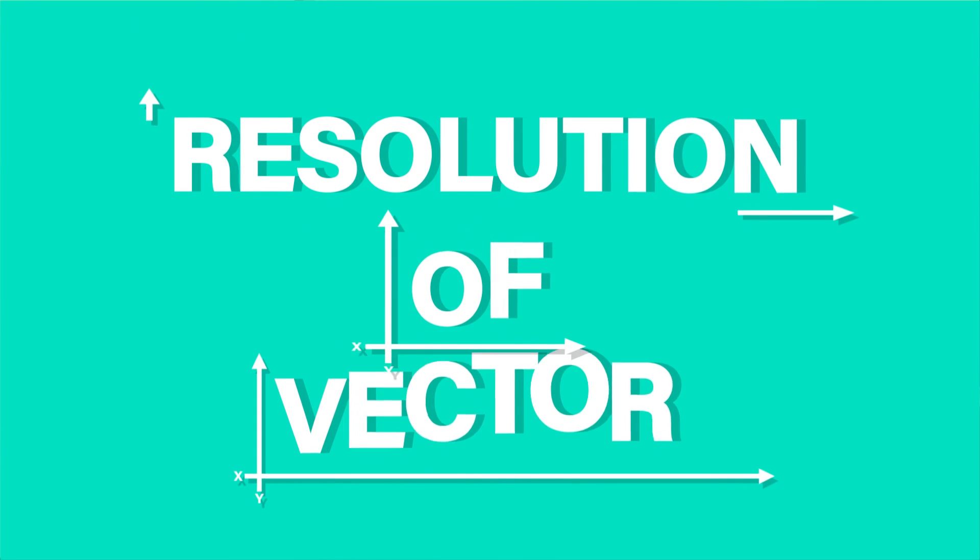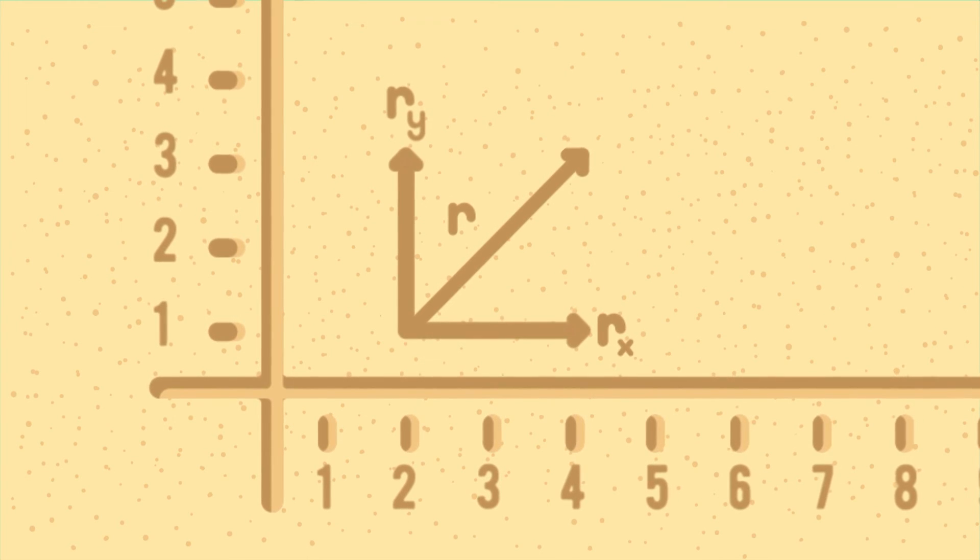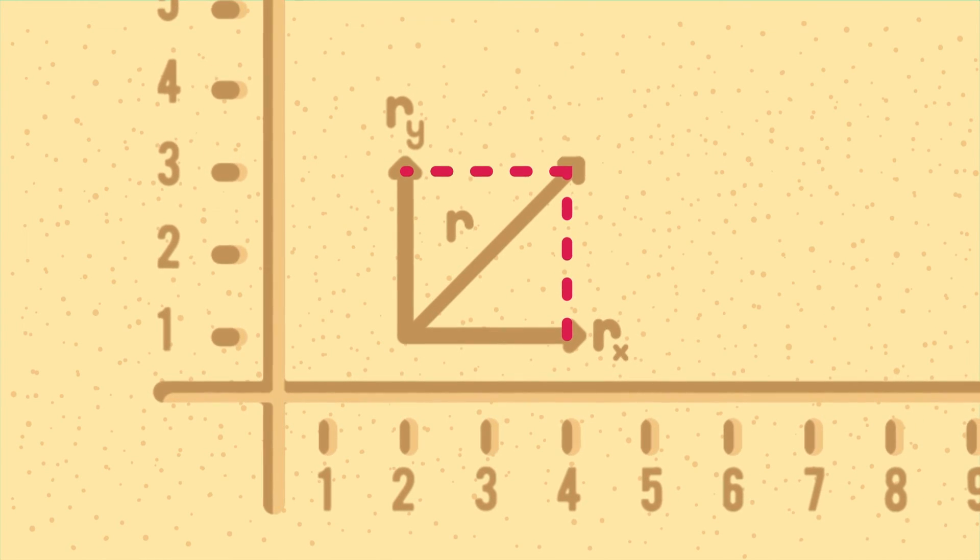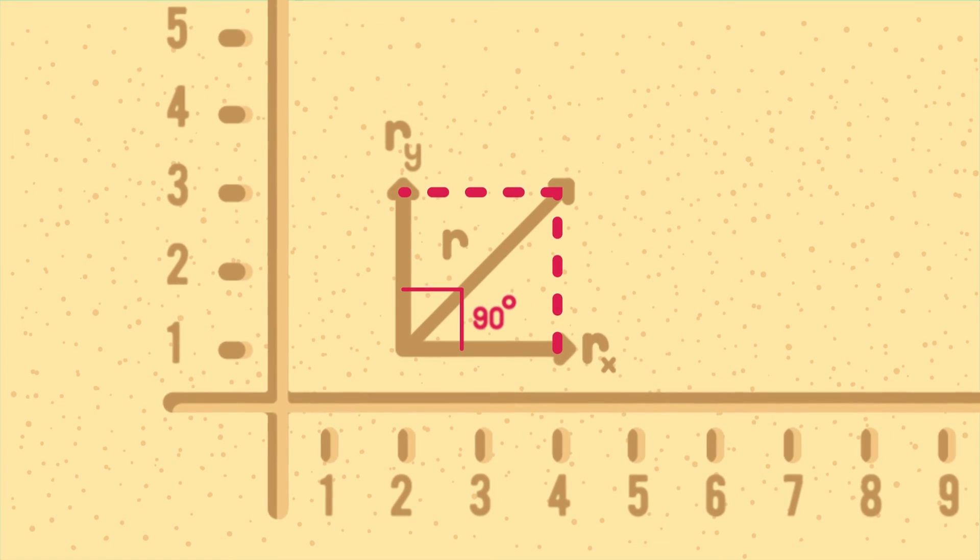Resolution of a vector. Splitting up a single vector into its rectangular components is called the resolution of a vector. The rectangular components of a vector has to make an angle of 90 degrees with each other.